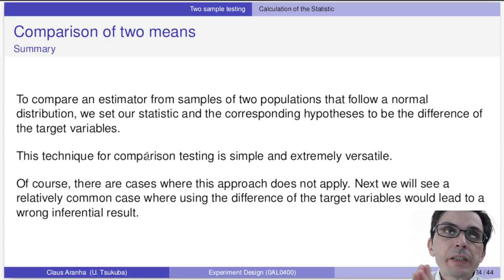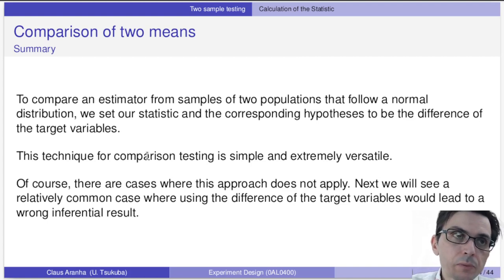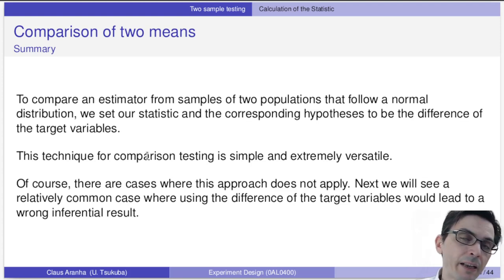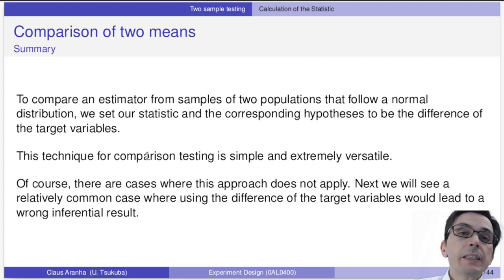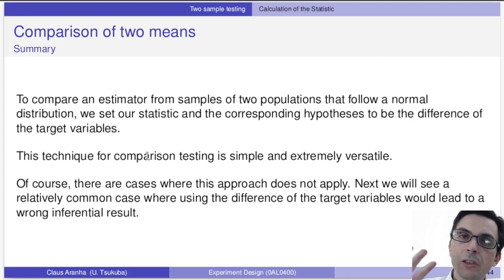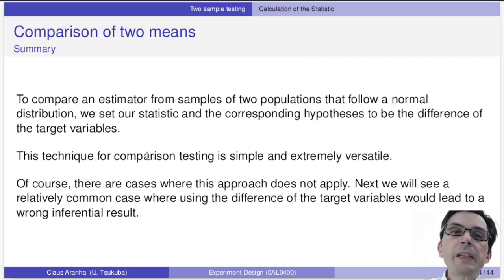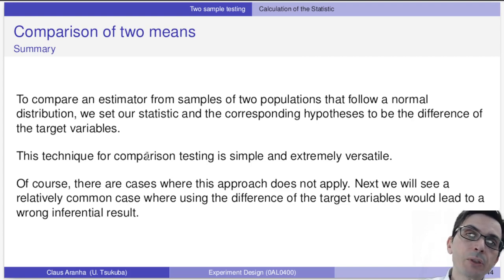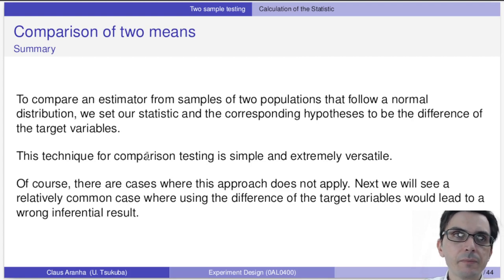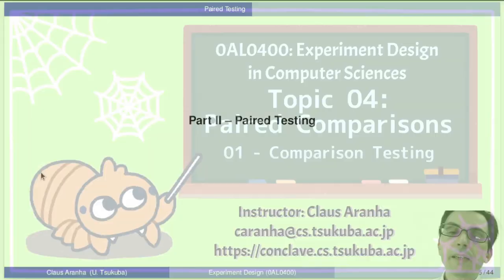To summarize: to compare an estimator from samples of two populations that follow a normal distribution, our statistic becomes the difference of the target variables. We simply subtracted the means and used the t-test. To do this validly, we made the assumption that the variances of the two are about the same — or if they're not, we use the Welch t-test with a different calculation. We also make the assumption that observations are independent. The independence assumption can be broken in many different ways, and in the next video we'll see a very important case where this happens and how we deal with it. That's the end of this video — see you in the next one.